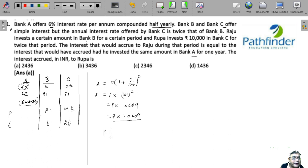This tells you that principle grew by 6.09%. If you look at this number, 1.0609, principle grew by 6.09%. So had Raju invested this amount in Bank A, his effective interest would be 6.09%.